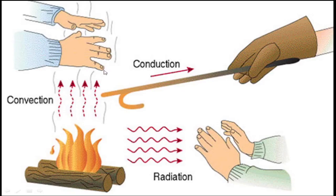In convection, the energy-carrying particles leave their place, move to other locations, and transfer their heat energy from one location to another. They move from a zone where temperature is higher to a zone where temperature is lower. For example, when you place your hands just over a fire, the hot flue gases — which carry high heat energy — move and touch the hands, conveying heat from the fire to the hands.